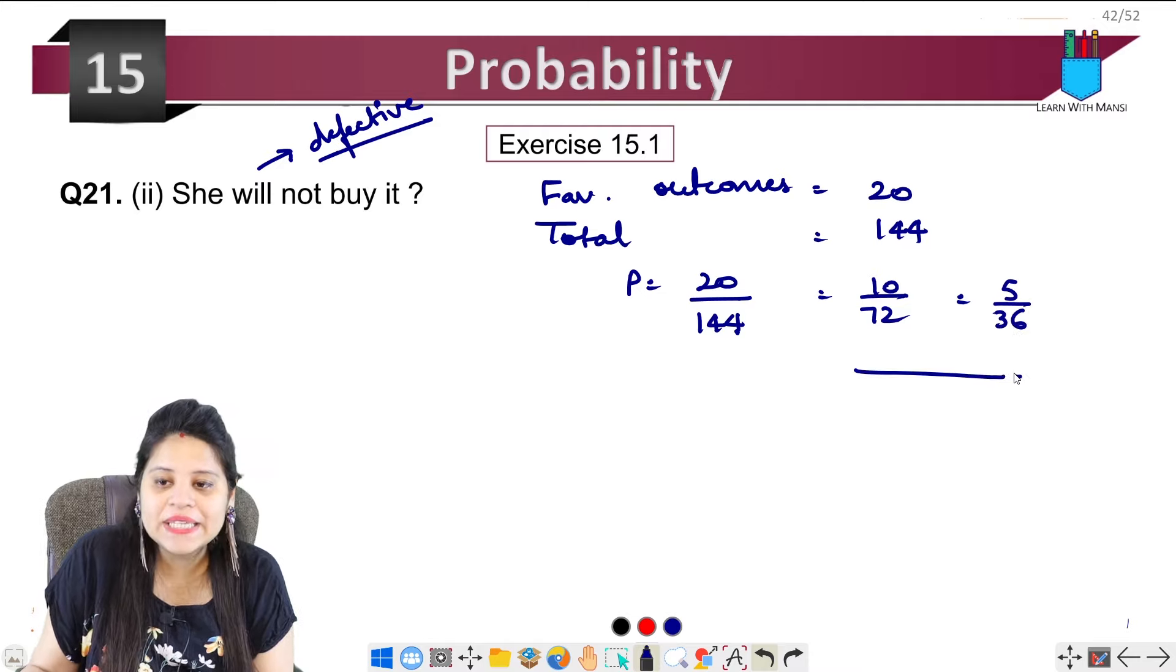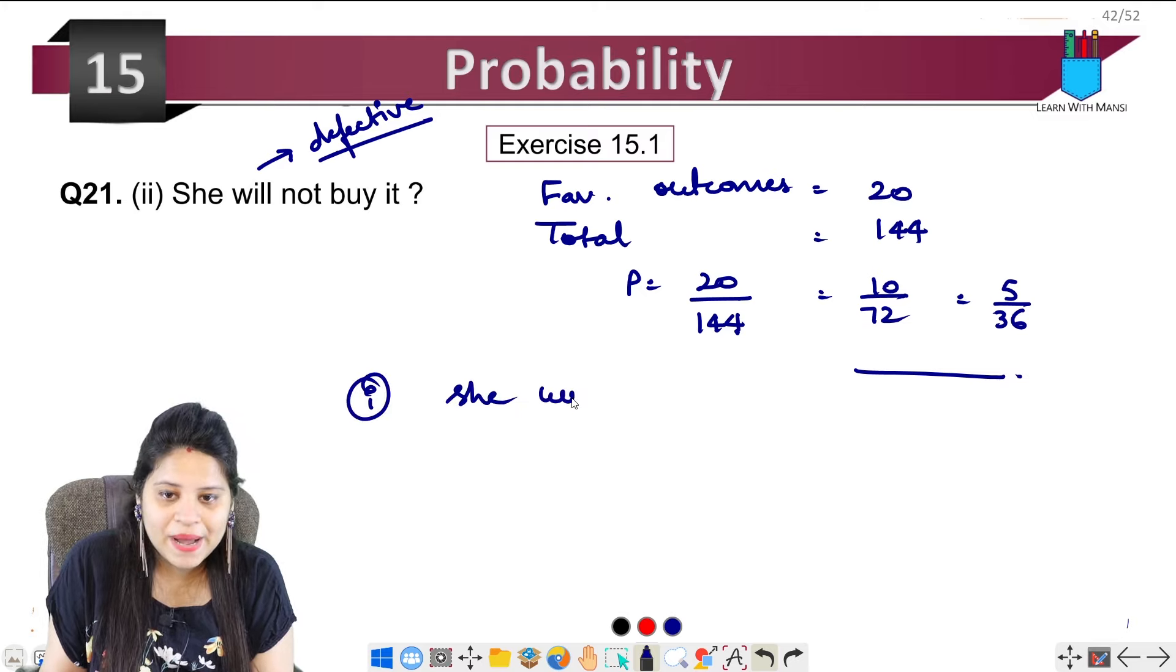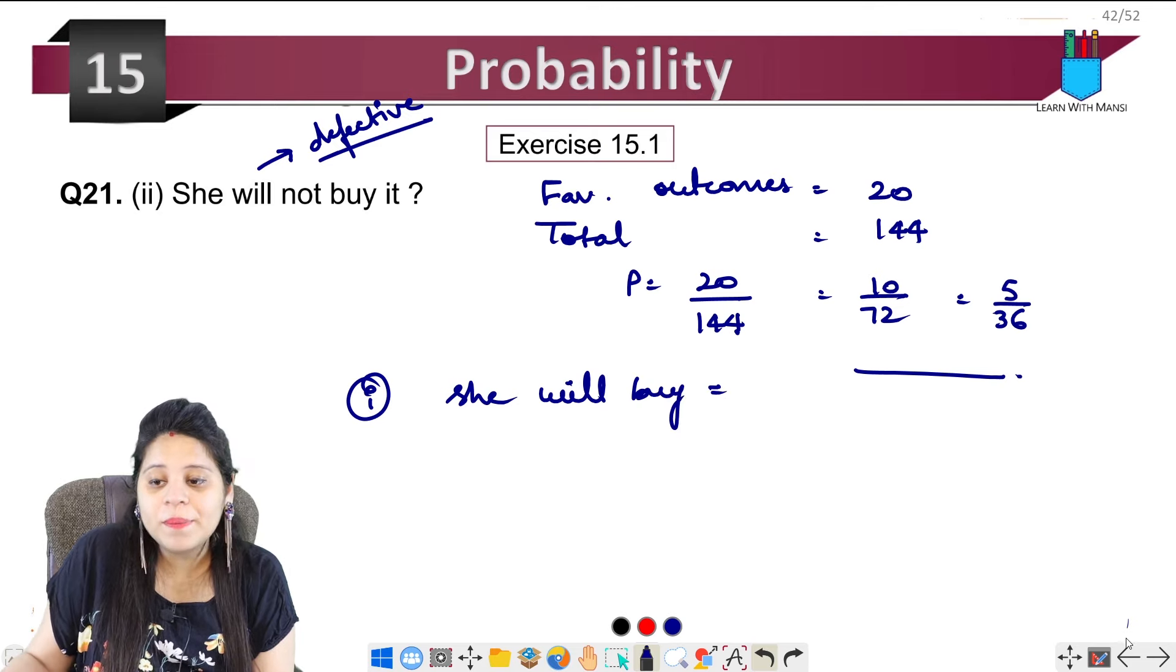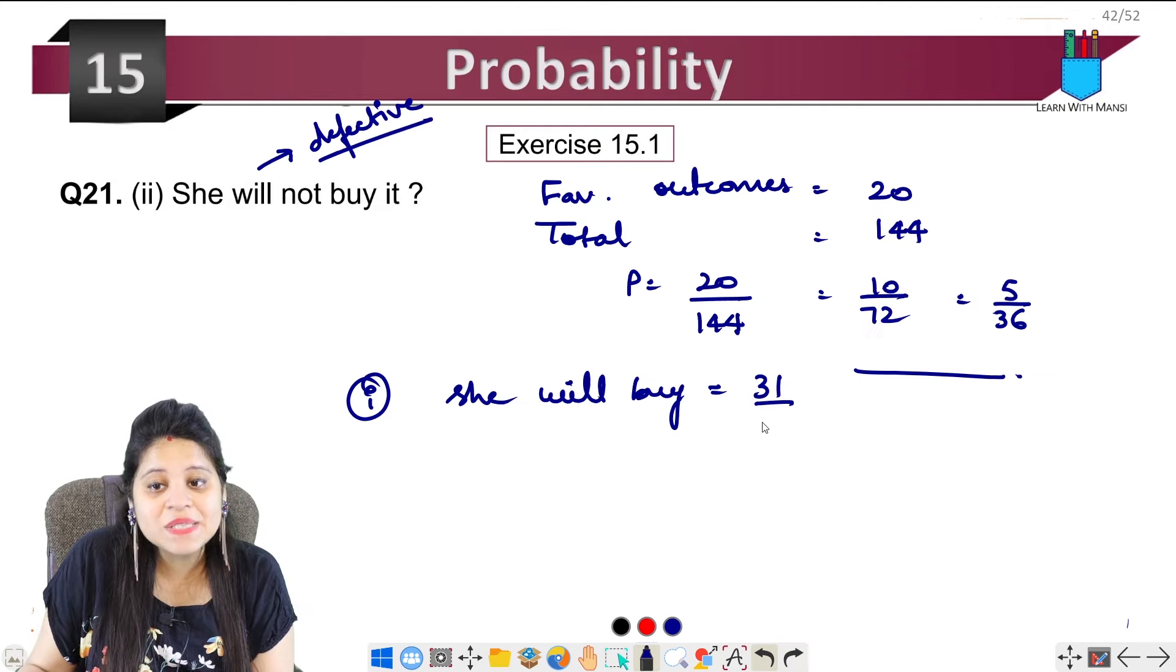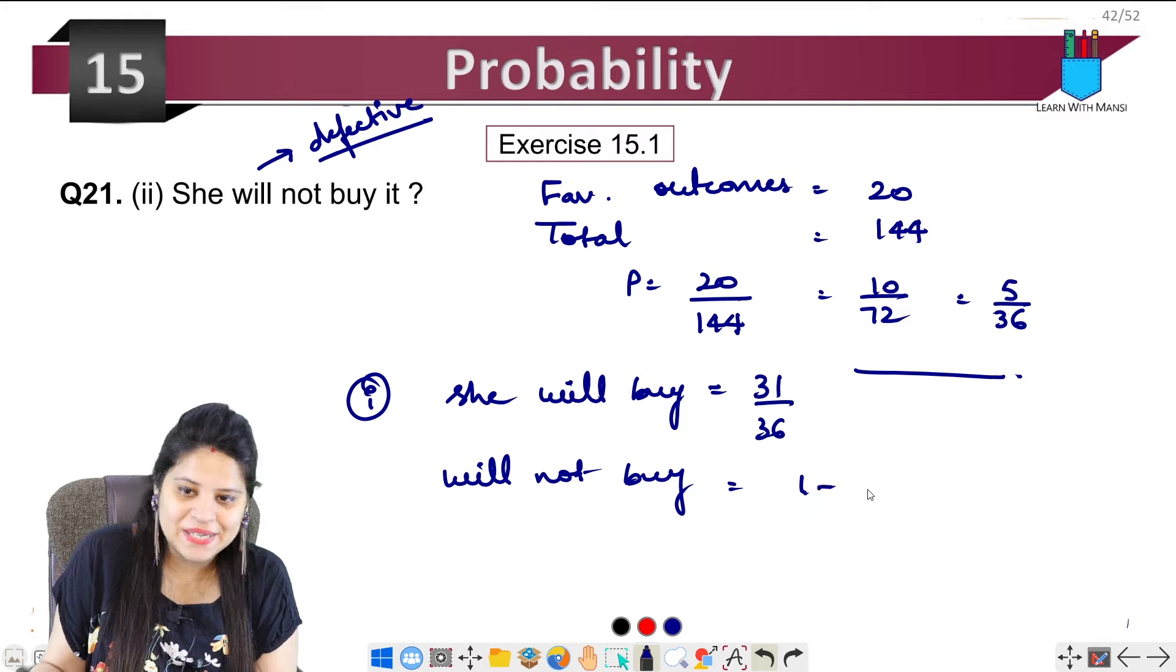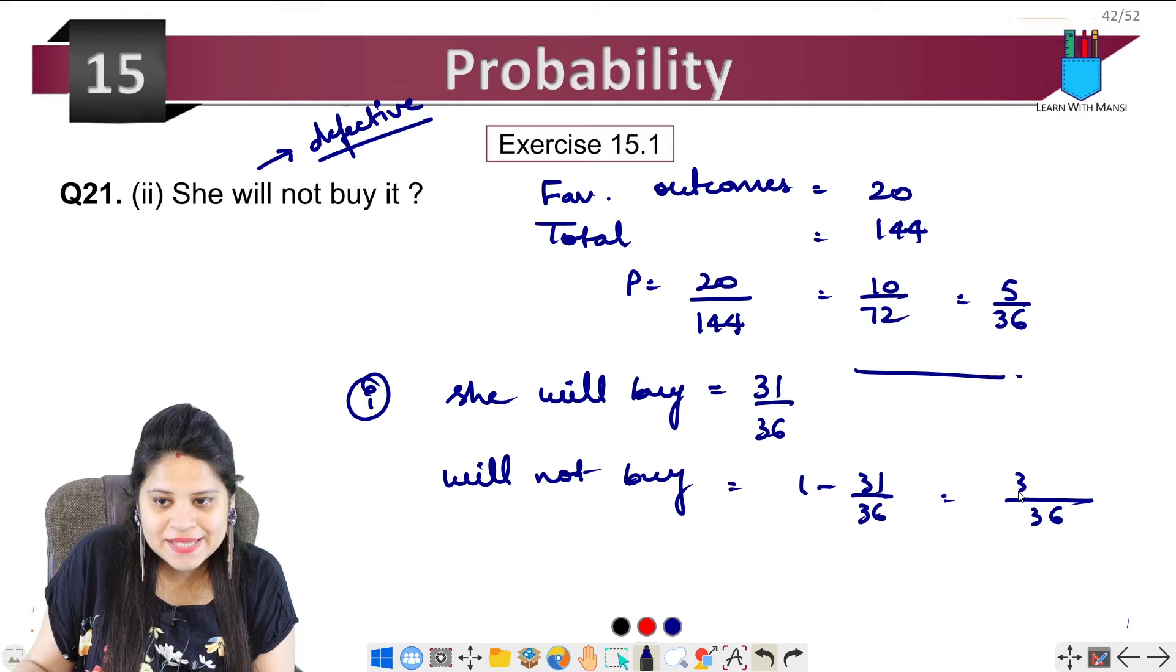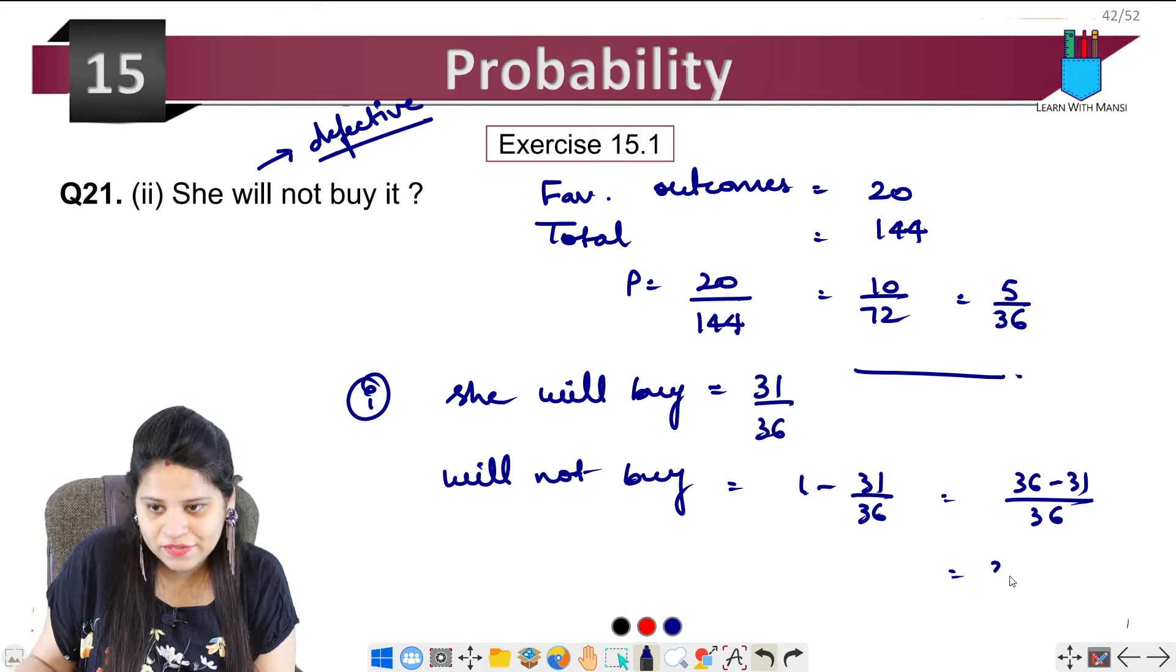In the first part, we found that she will buy it with probability 31 upon 36. So if we need to find that she will not buy, we can do 1 minus 31 upon 36. Taking LCM 36, this is 36 minus 31 upon 36, which gives us 5 upon 36. In both cases, the answer is the same.